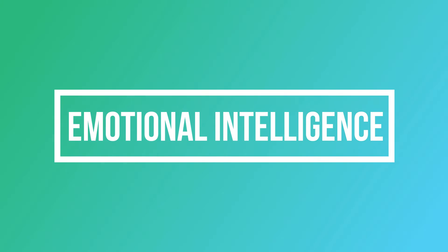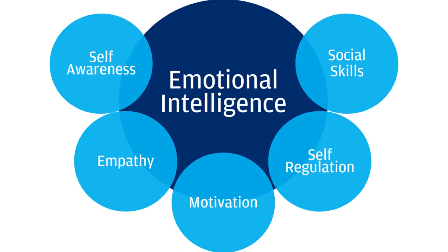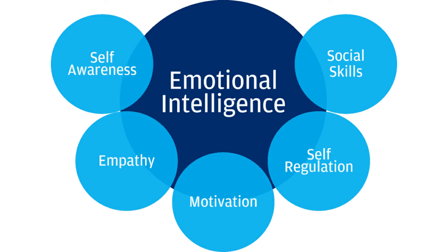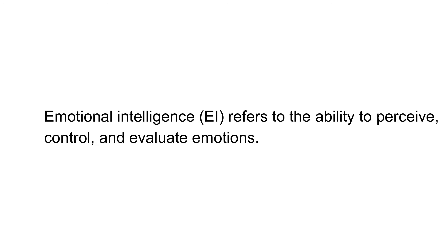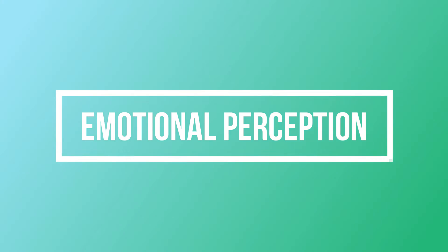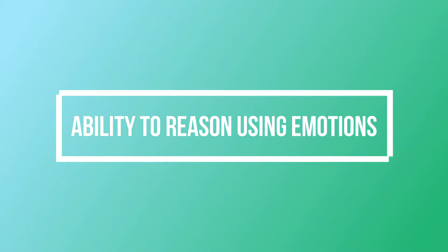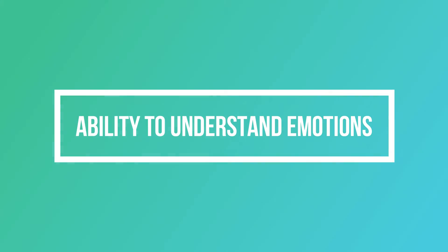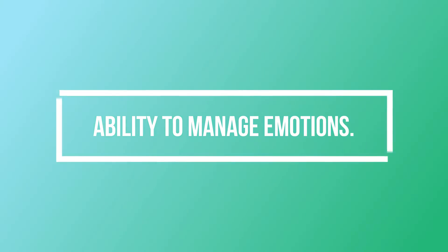Now let's move on to another social literacy skill, which is emotional intelligence. Emotional intelligence refers to the ability to perceive, control, and evaluate emotions. Researchers suggest that there are four different levels of emotional intelligence, including emotional perception, the ability to reason using emotions, the ability to understand emotions, and the ability to manage emotions.